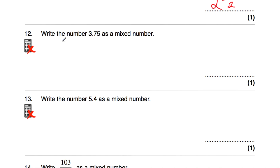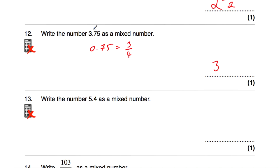Question number 12: write the number 3.75 as a mixed number. The whole number part is going to be 3, and then we've got 0.75. Remember that 0.75 is equal to 3 quarters — you should know that off by heart. So 3 quarters is 0.75, and this would be 3 and 3 quarters.